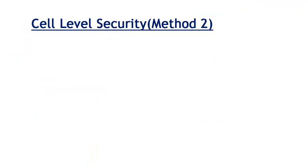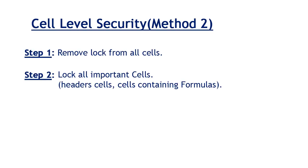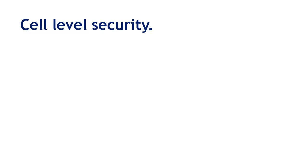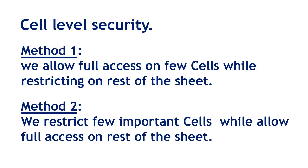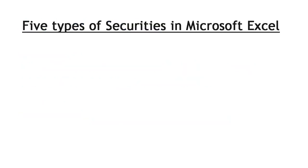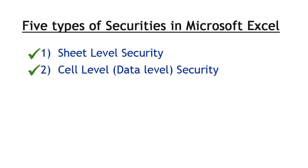Let us summarize cell level security in Excel. It involves three steps: Step 1 — remove lock from all cells. Step 2 — lock all the important cells. Step 3 — protect the sheet as usual. In this video, we have seen that depending on our requirement, we can achieve cell level security in two ways. Method 1: allow access on a few cells while the rest of the sheet is locked. Method 2: restrict a few cells while allowing full access to the rest of the sheet. Using cell level security, we can lock certain cells while allowing work on the rest of the sheet smoothly.